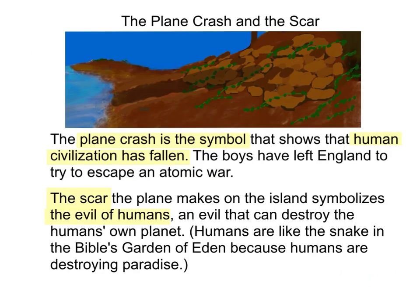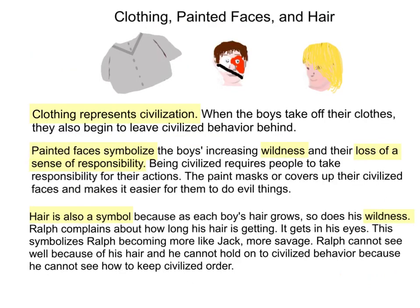The plane crash and the scar: The plane crash is the symbol that shows that human civilization has fallen. The boys have left England to try to escape an atomic war. The scar the plane makes on the island symbolizes the evil of humans — an evil that can destroy the human's own planet. Humans are like the snake in the Bible's Garden of Eden because humans are destroying paradise.